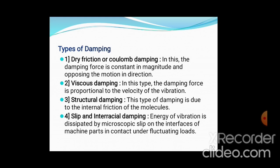The second type is viscous damping. In this case, whatever the damping force is, it is directly proportional to the velocity of vibrations. So the velocity of vibration depends upon the kind of damping force that we are applying. The third type is structural damping, which is solely due to the internal friction of molecules at the micro level — internal friction existing between different molecules.